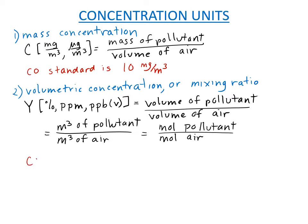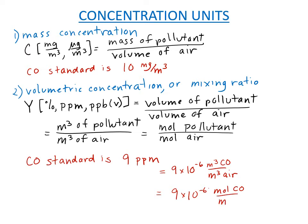So, for example, the carbon monoxide standard in volumetric concentration units is 9 parts per million. And what that means is 9 times 10 to the minus 6 cubic meters of CO per cubic meters of air, or 9 times 10 to the minus 6 moles of CO per moles of air.